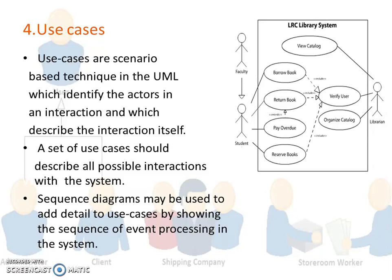We can use some other processes in order to obtain requirements, such as surveys, questionnaires, task analysis, domain analysis, brainstorming, prototyping, observation and ethnography. These are just some of the other ways to find out, gather and document requirements so that the developer can get a good idea of all the requirements and include them accordingly in the system.